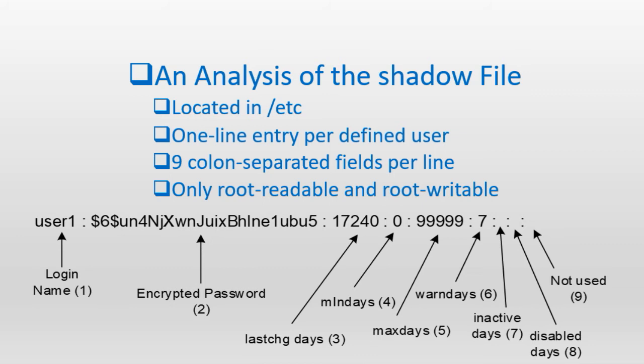Let's take a close look at the shadow file and analyze a sample entry to understand how it stores information. The shadow file maintains a one-line entry per user account for each corresponding user account defined in the passwd file. Each line in this file is comprised of nine colon-separated fields. The permissions on this file are restricted to root-readable only. The slide shows a sample entry from the shadow file for user one, with a number in parentheses to identify each field.